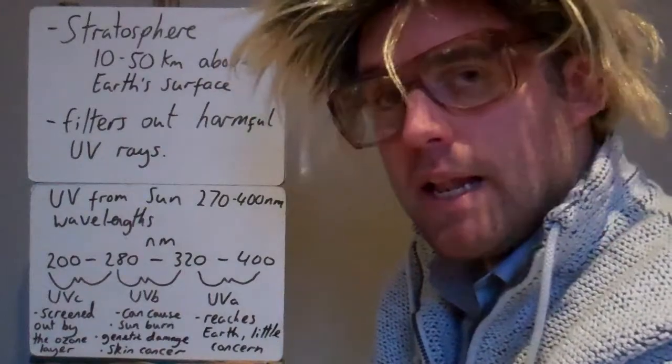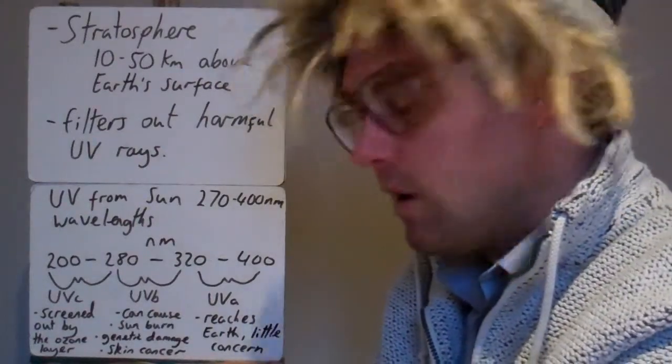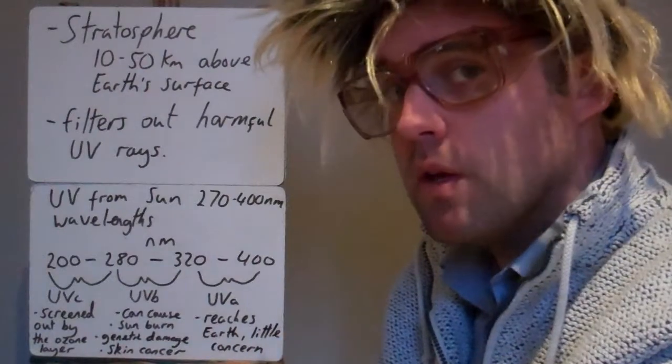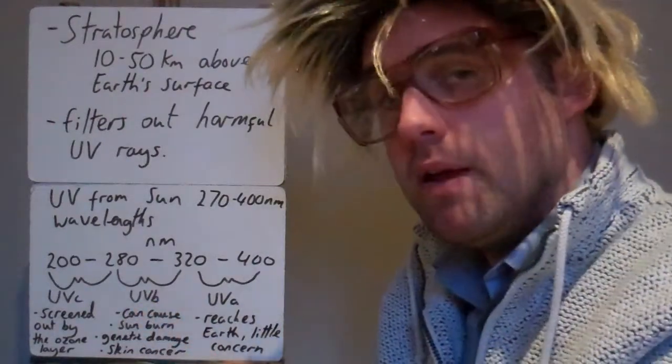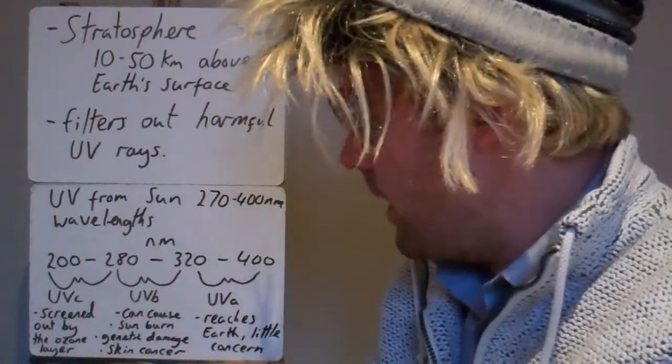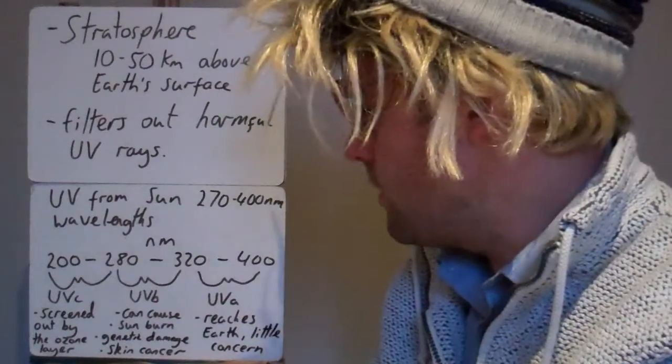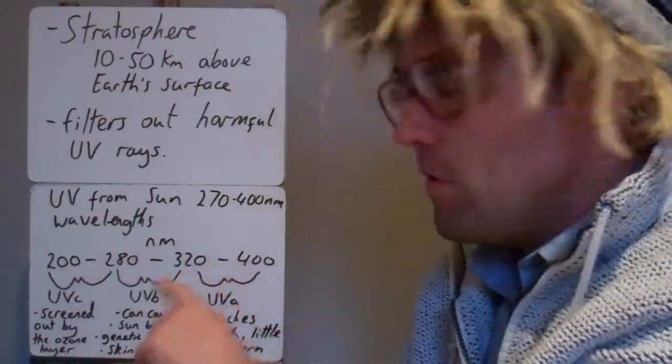When you buy suntan lotion and sometimes when you buy sunglasses, they'll talk about what type of UV it filters out. So the one to look out for is UV-B because that's the one you don't want to be reaching your skin. There's different wavelengths of UV.